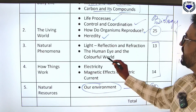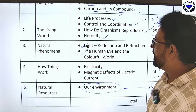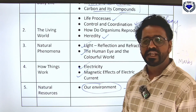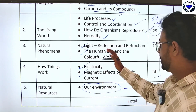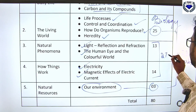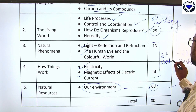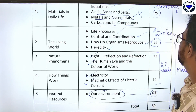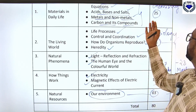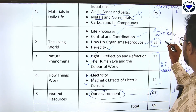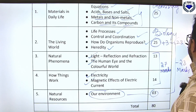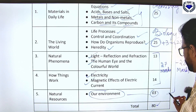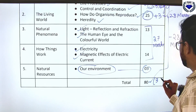Coming to physics — Natural Phenomena covering Light and the Human Eye and Colorful World, and How Things Work covering Electricity and Magnetic Effect of Electric Current. Both concepts together form physics with a total of four chapters carrying 27 marks. So chemistry 25, biology 28, and physics 27 gives you a total of 80 marks.